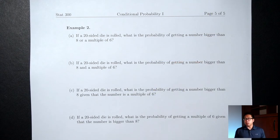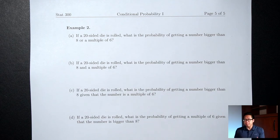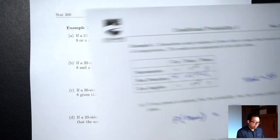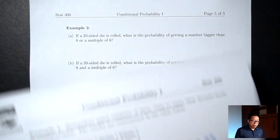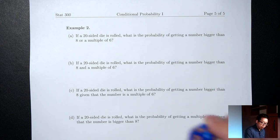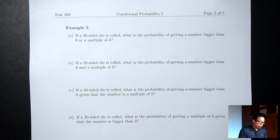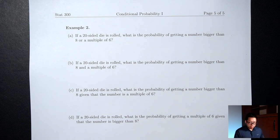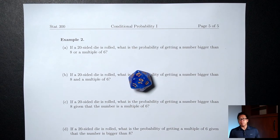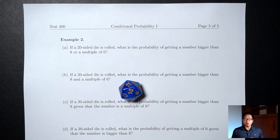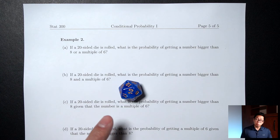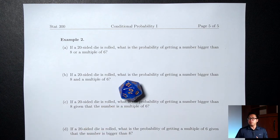We talked about a lot of stuff today — the difference between 'and' and 'or,' conditional probability with the word 'given,' picking multiple people, and probabilities involving 'at least one.' Now I want to talk about all those things in the context of a dice. Part A: if a 20-sided die is rolled, what's the probability of getting a number bigger than 8 or a multiple of 6? When I roll this die, the sample space is 1 through 20.